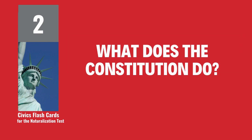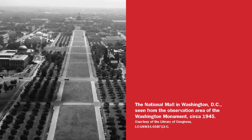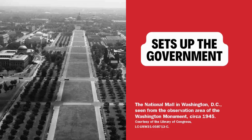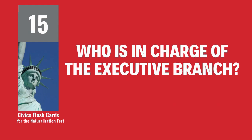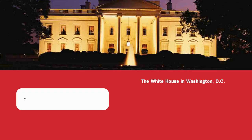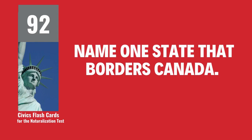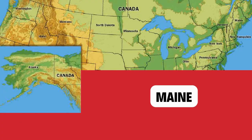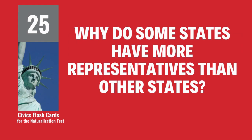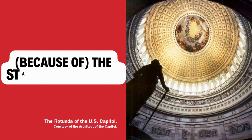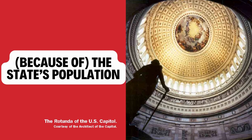What does the Constitution do? Sets up the government. Who is in charge of the executive branch? The president. Name one state that borders Canada. Maine. Why do some states have more representatives than other states? Because of the state's population.